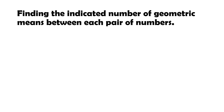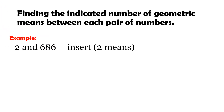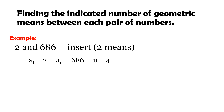So how do we find the indicated number of geometric means between a given pair of numbers? For example, we have 2 and 686, and we are to insert 2 means. Inserting 2 means gives us 4 terms total. The first term is 2, the last term is 686, and n is 4.